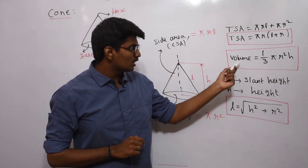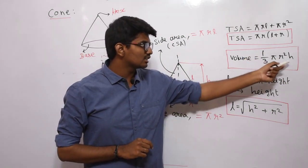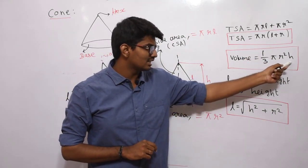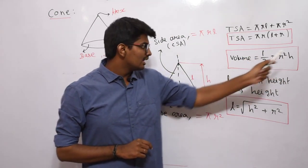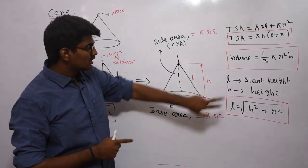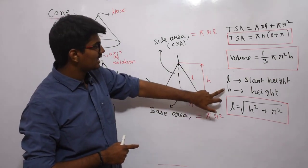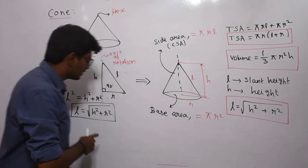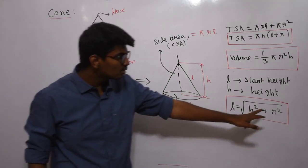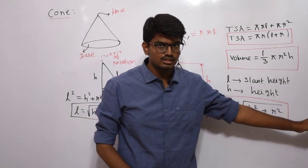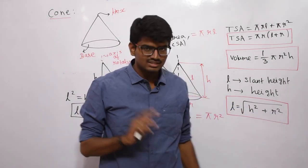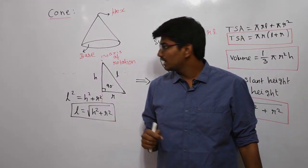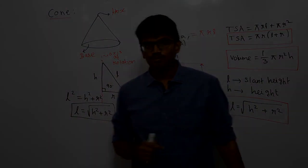The volume of the cone is nothing but (1/3)πR²H. Note one important point here: it is H, not L. H is the height of the cone, L is the slant height, and directly from Pythagoras theorem we can get L = √(H² + R²). This is a simple shape with simple formulas. We can proceed to the next shape.